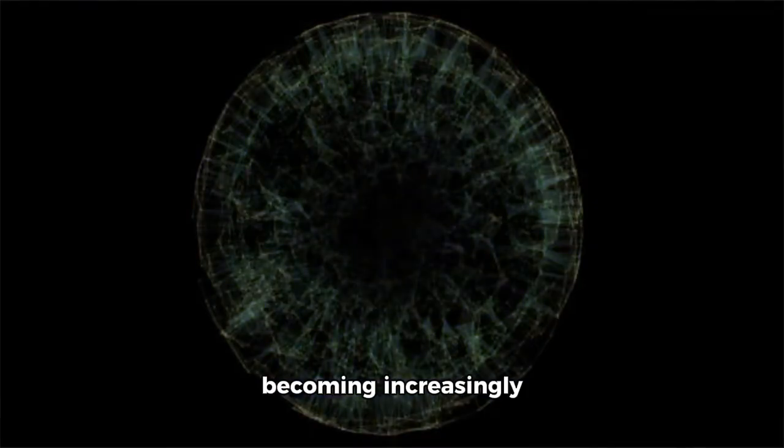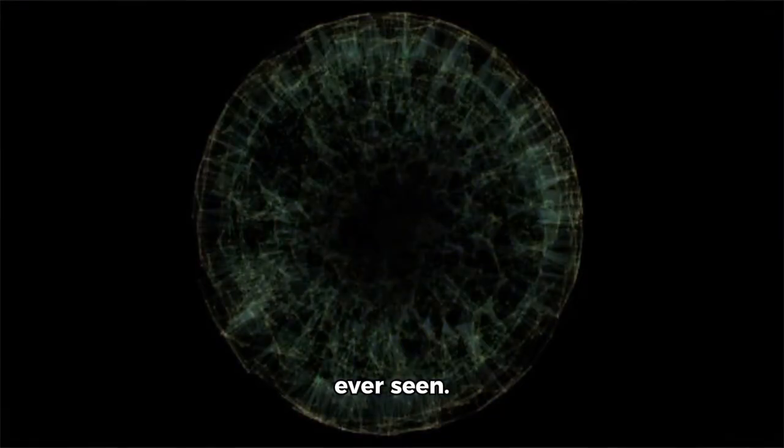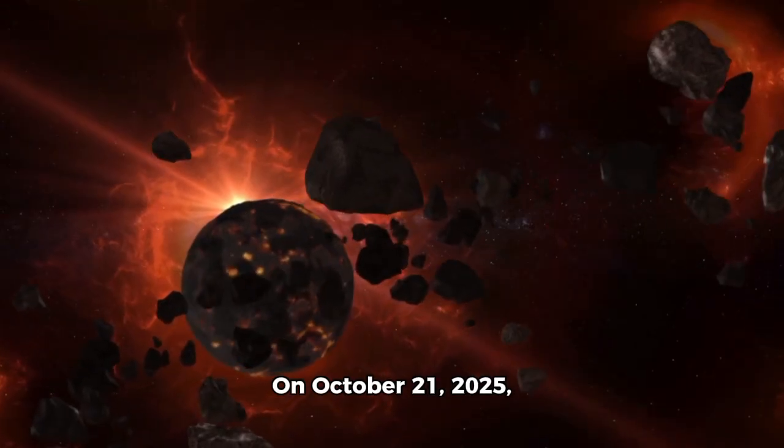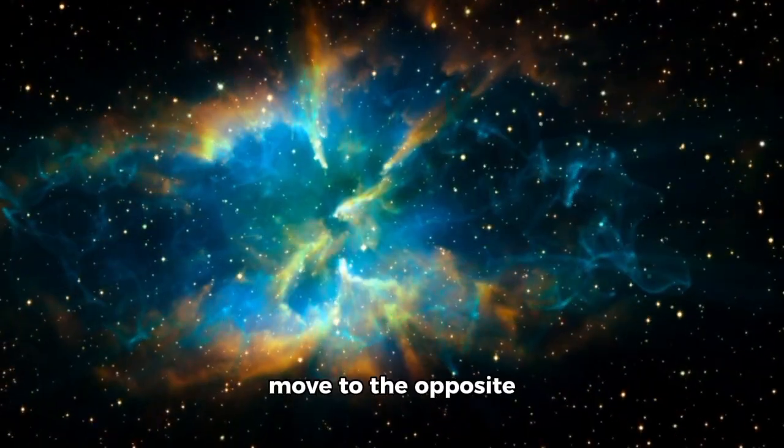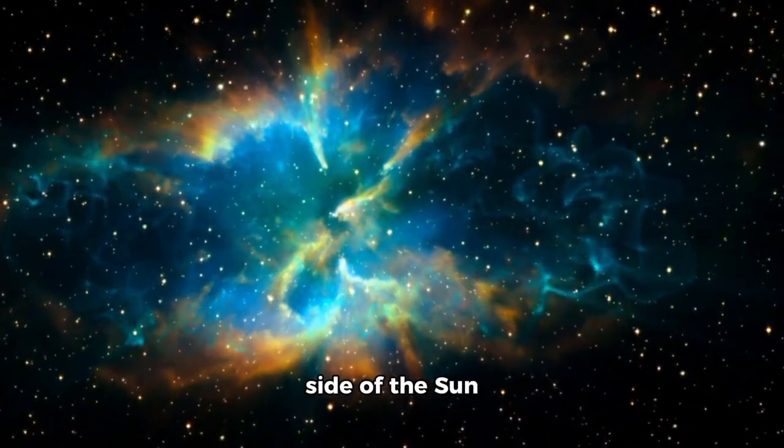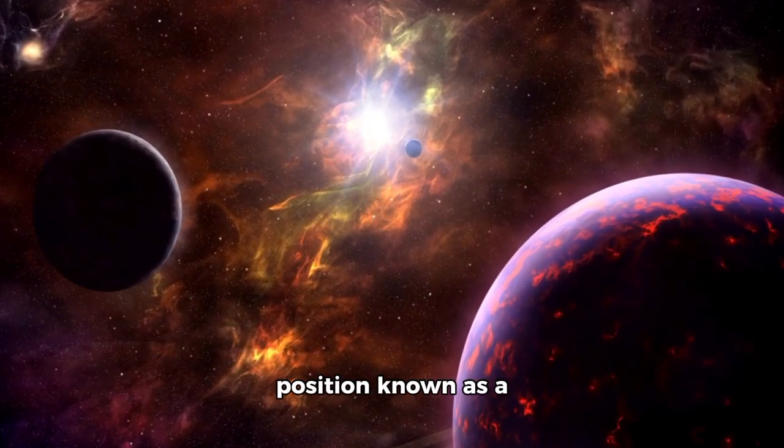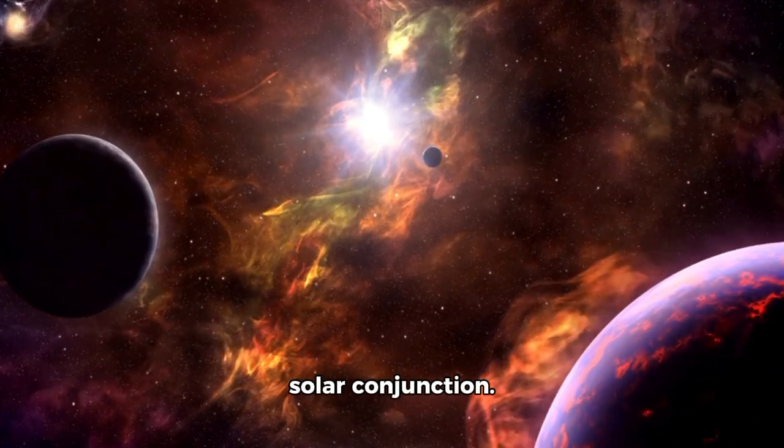However, scientists are becoming increasingly uneasy because 3-Eye Atlas is unlike any natural comet we've ever seen. On October 21, 2025, the interstellar object 3-Eye Atlas will move to the opposite side of the Sun relative to Earth, a position known as a solar conjunction.